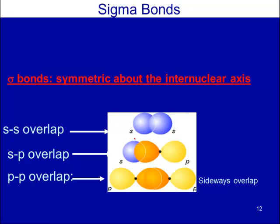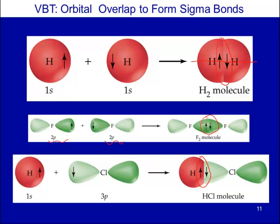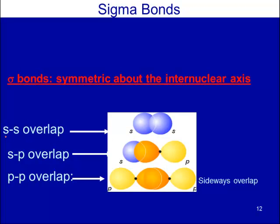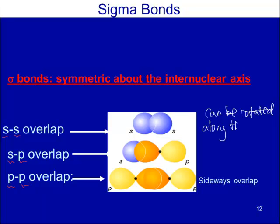You can have s-s, s-p, and p-p overlapping — all of these are sigma bonds. They are symmetrical along the internuclear axis, which means you can rotate the whole molecule around that axis without impacting the overlap. This is a characteristic of sigma bonds: they can be rotated along the internuclear axis.